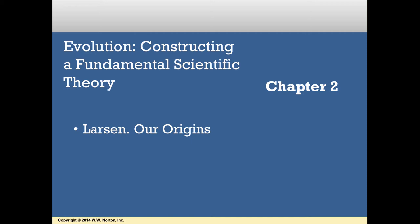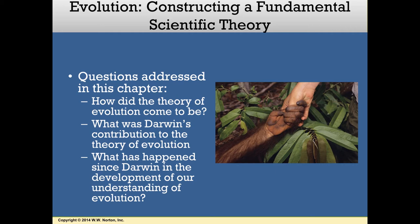All living organisms on Earth are related through a common ancestry, but how did this all happen, and how do we know this? In this lecture, I will explore the history of scientific thinking that has led to our current understanding of biological evolution. Charles Darwin features quite prominently, but he did not come up with biological evolution out of the blue — his ideas were strongly influenced by many thinkers from many different scientific disciplines. We will ask: first, how did the theory of evolution come to be? Second, what was Darwin's contribution? And third, what has happened since Darwin?